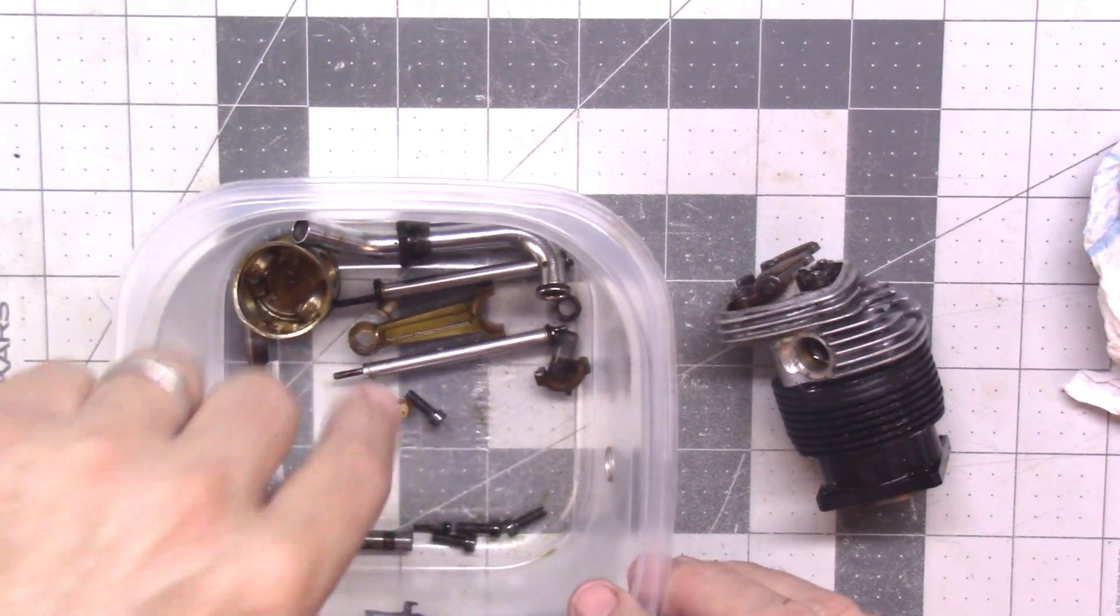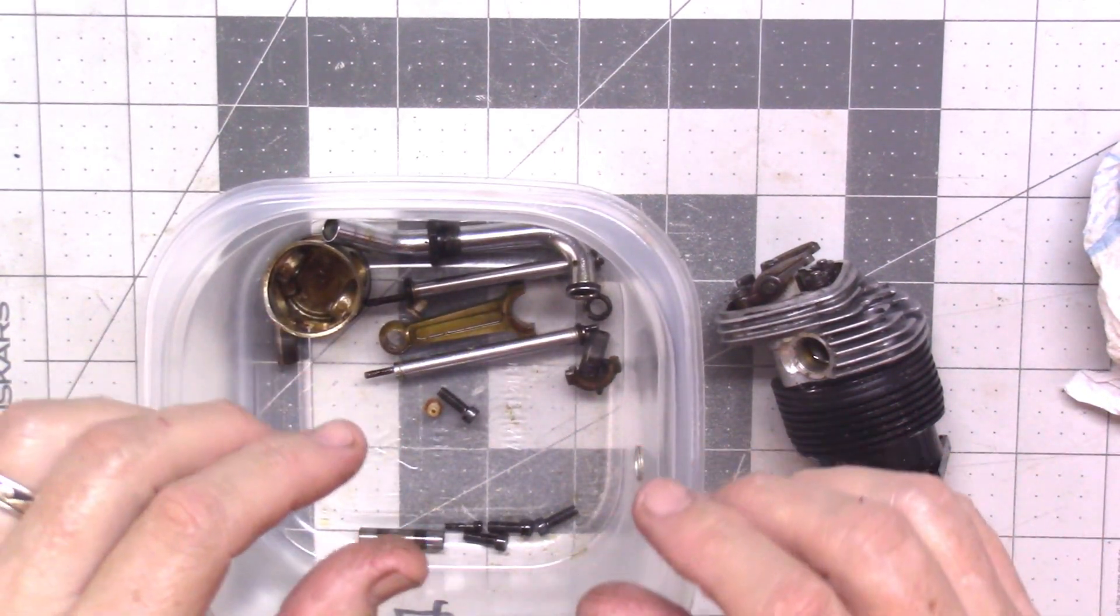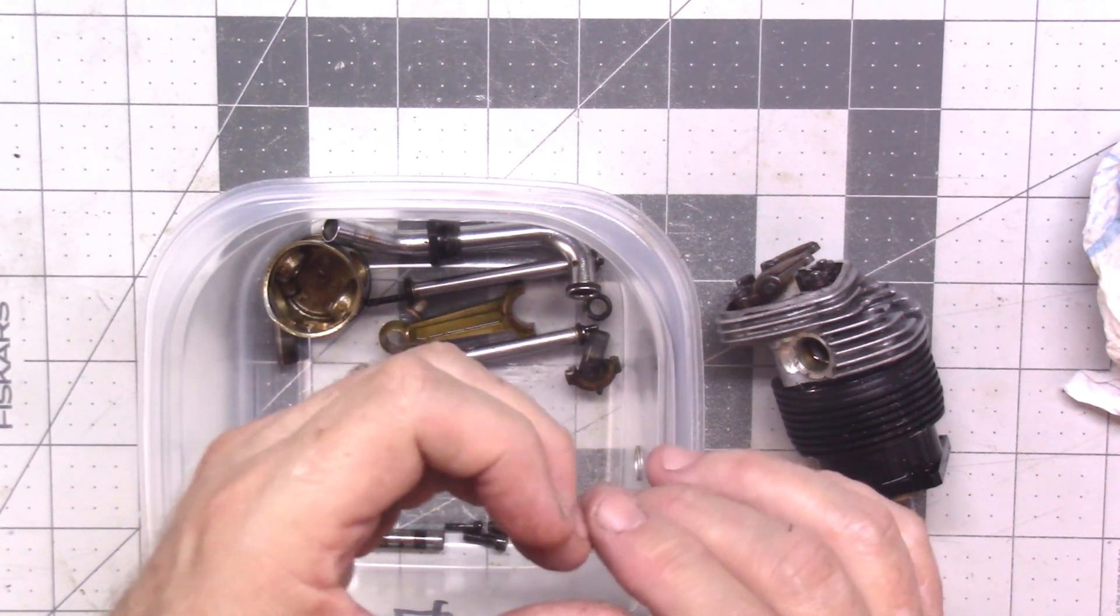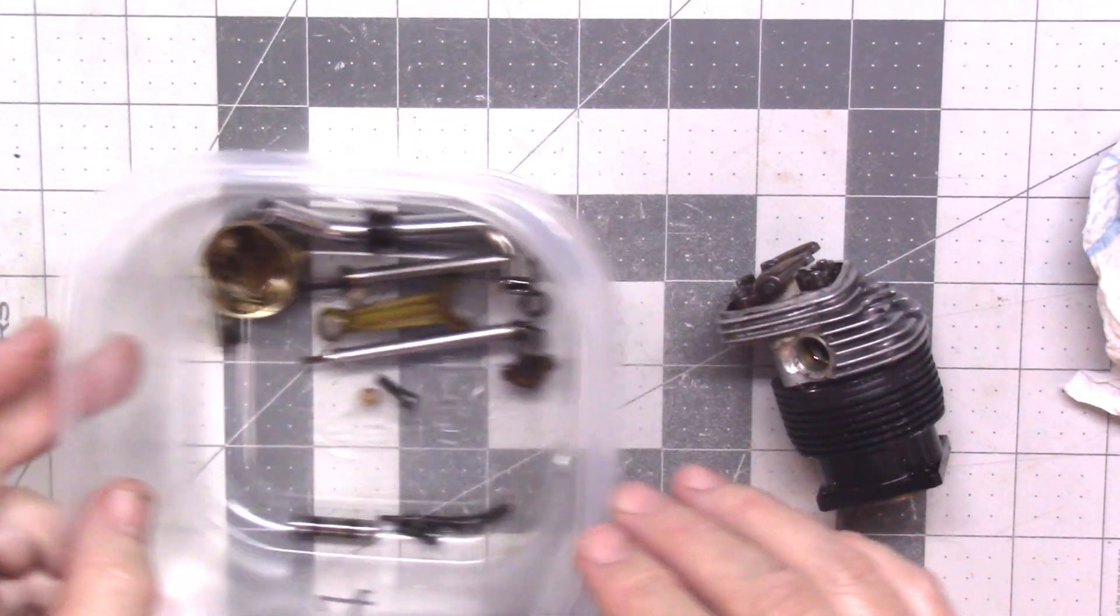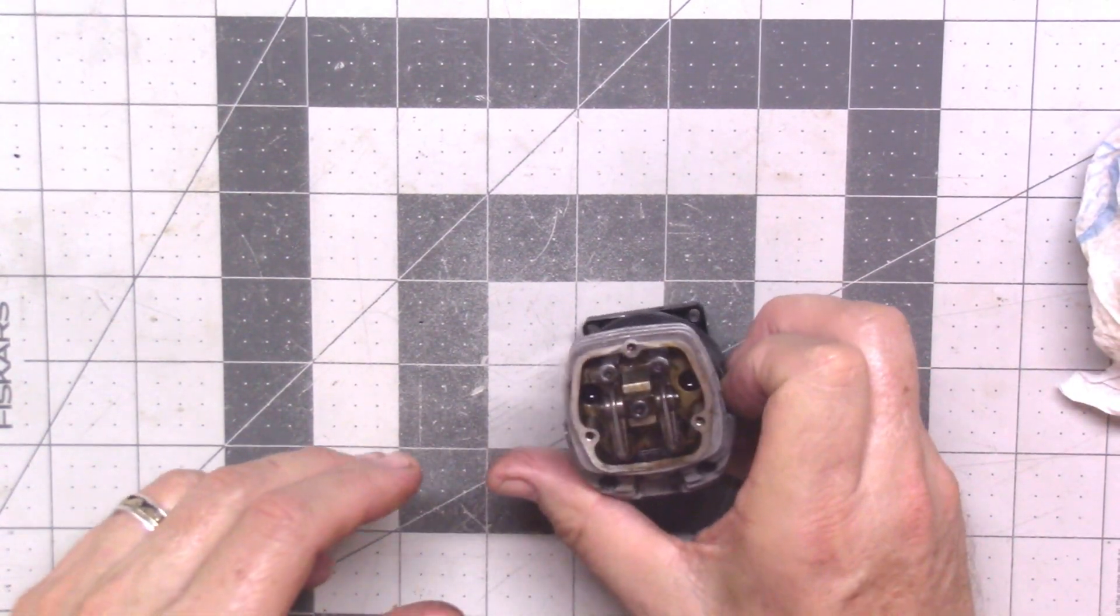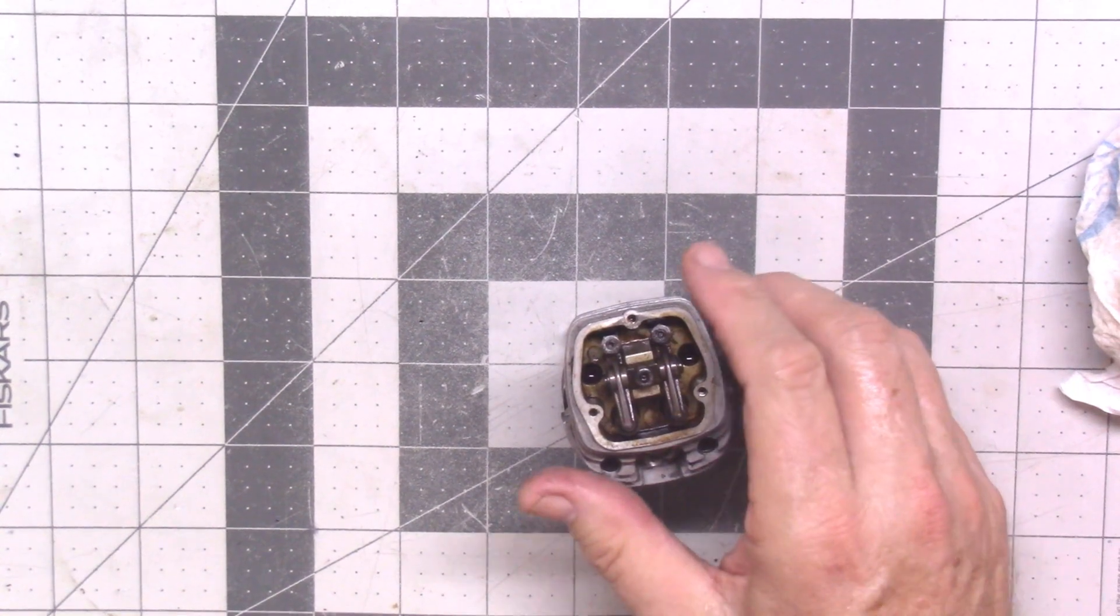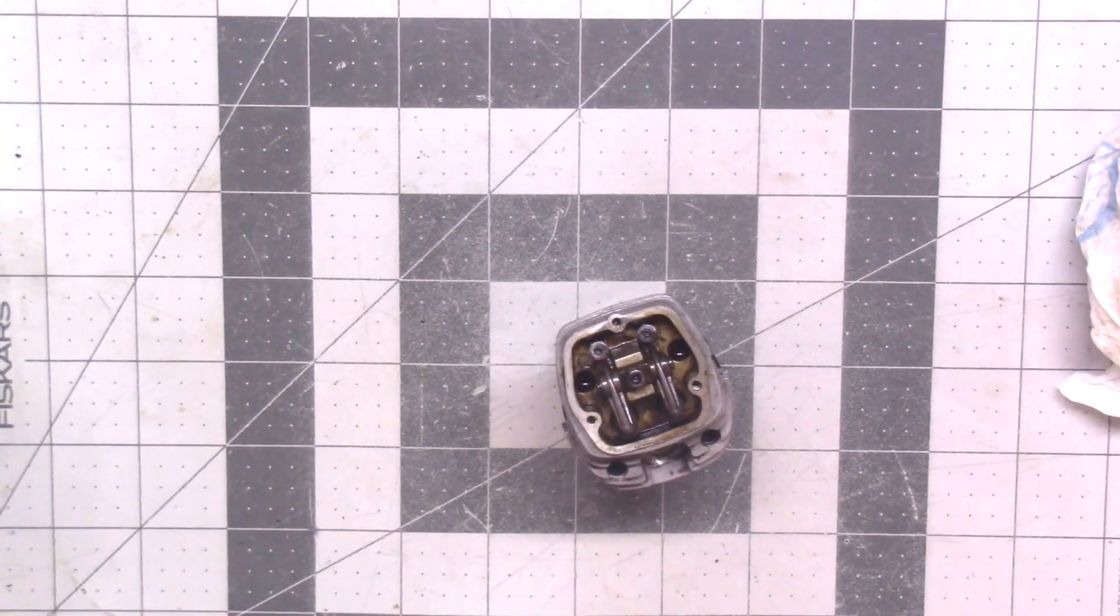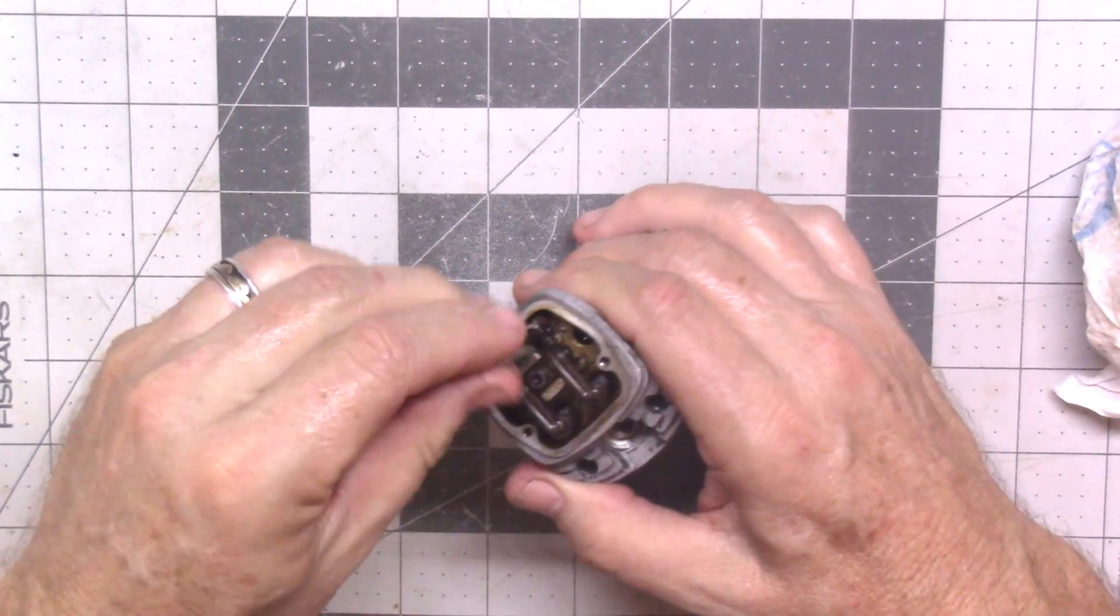The very small parts are going to go into a little shot glass that I put some LA's Totally Awesome cleaner in, and then just set the shot glass in there so that they're not getting all dispersed. So let's see what kind of tools I need for this particular task.